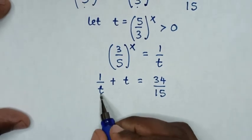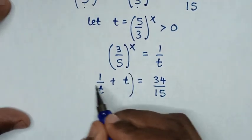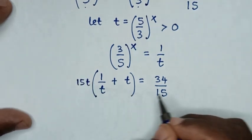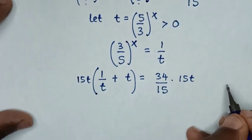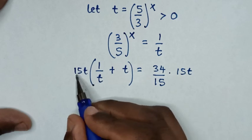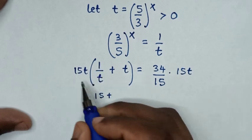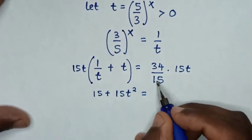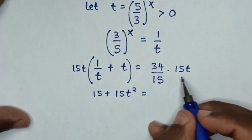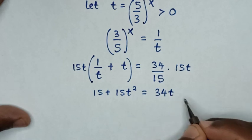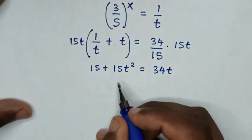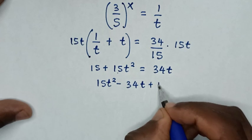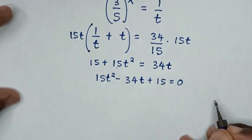The denominator is t and 15, so we multiply both sides by 15t. On the left, t cancels to give 15, plus 15t times t gives 15t². On the right, 15 cancels to give 34t. Rearranging gives the quadratic equation: 15t² − 34t + 15 equals 0.